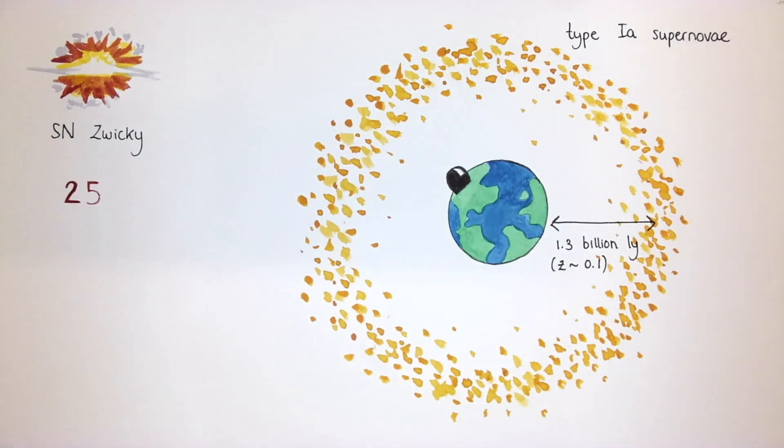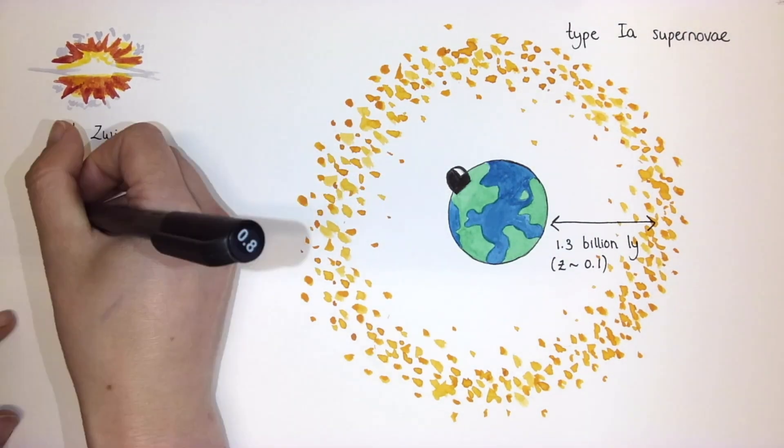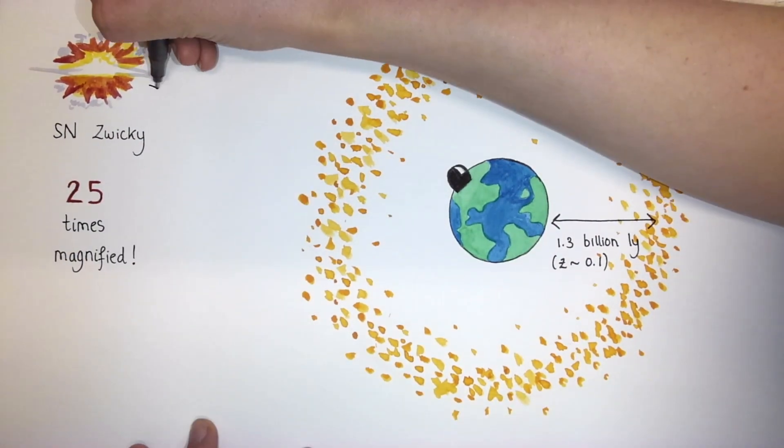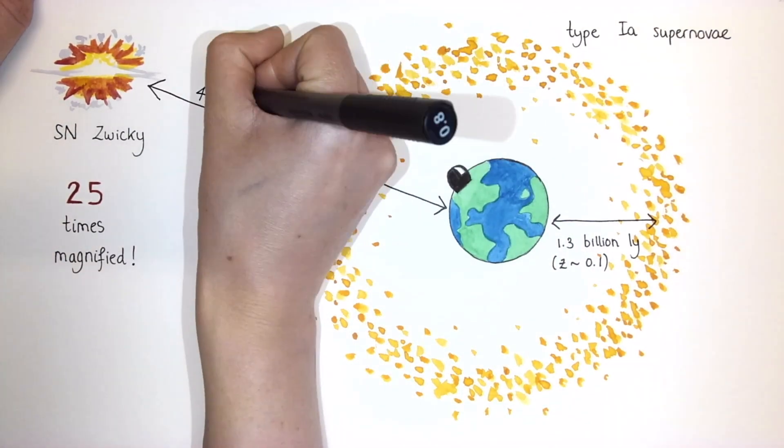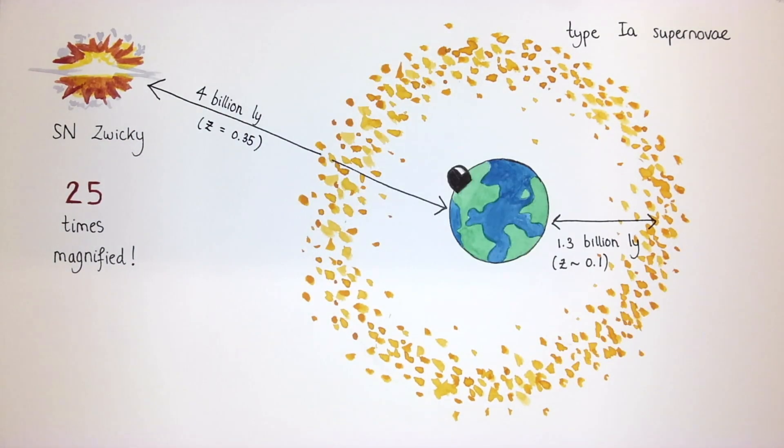The lens galaxy acted as a cosmic magnifying glass, and made Supernova Zwicky 25 times as bright. That's how we can observe it at a distance of almost 4 billion light-years, or a redshift of 0.35.